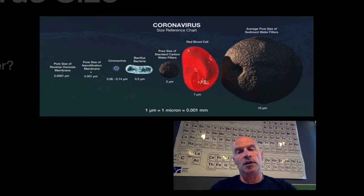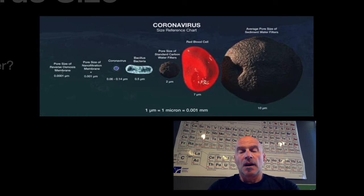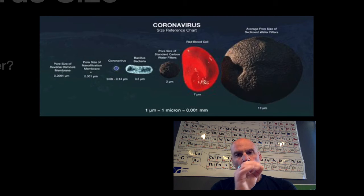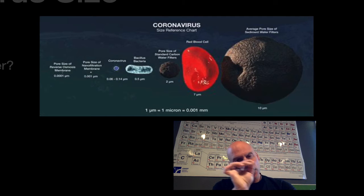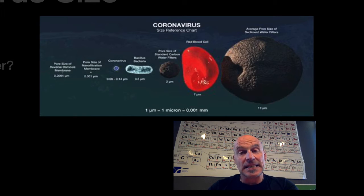Looking at this size graphic: you've got the approximate size of the coronavirus, then an average bacterial size, then the pore size of a carbon water filter. Moving further to the right, there's a red blood cell — and if you look at the red blood cell, it is huge compared to the coronavirus. Viruses are really small, and when they're really small they can fit through a lot of things. Last but not least, you've got the average pore size of a sediment water filter. Hopefully that helps with the relative size — viruses are teeny, teeny, tiny little things.